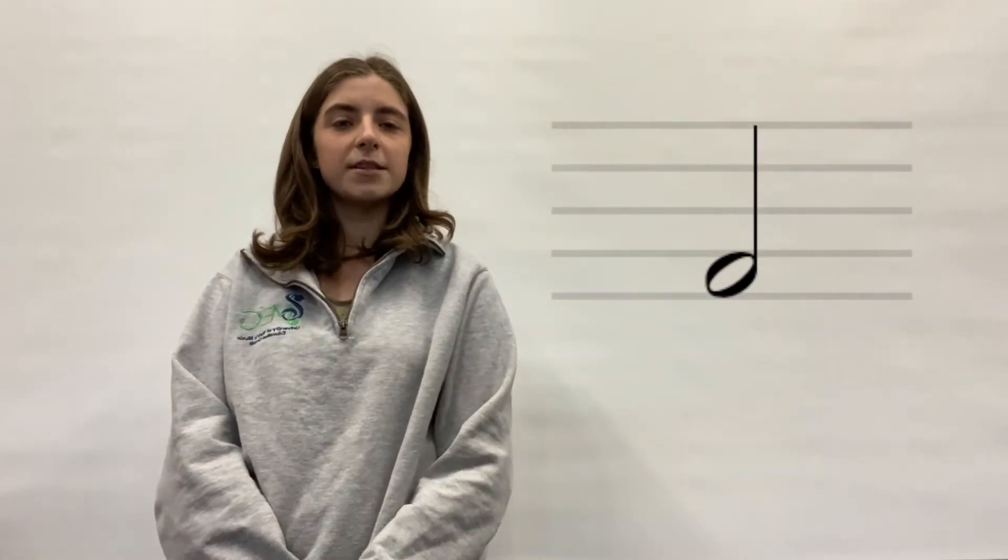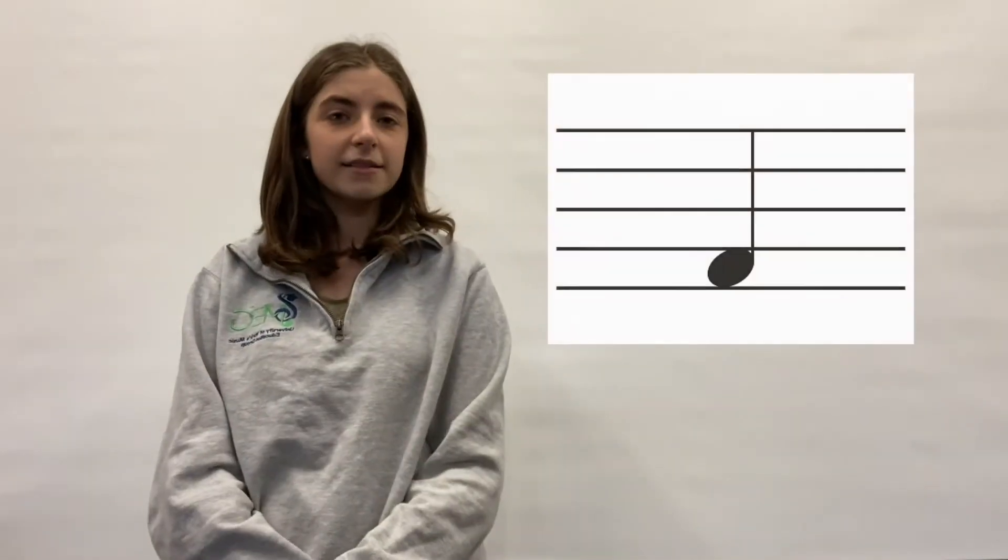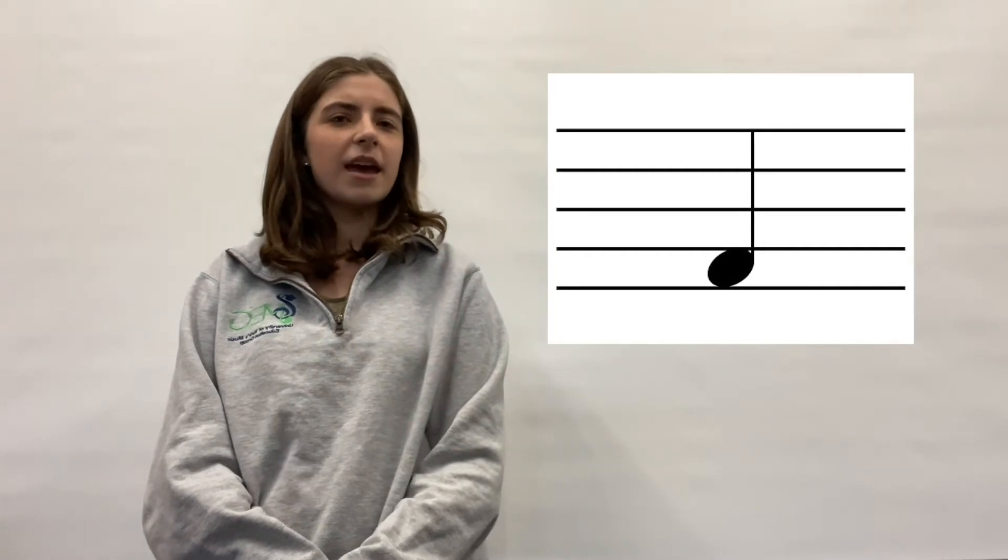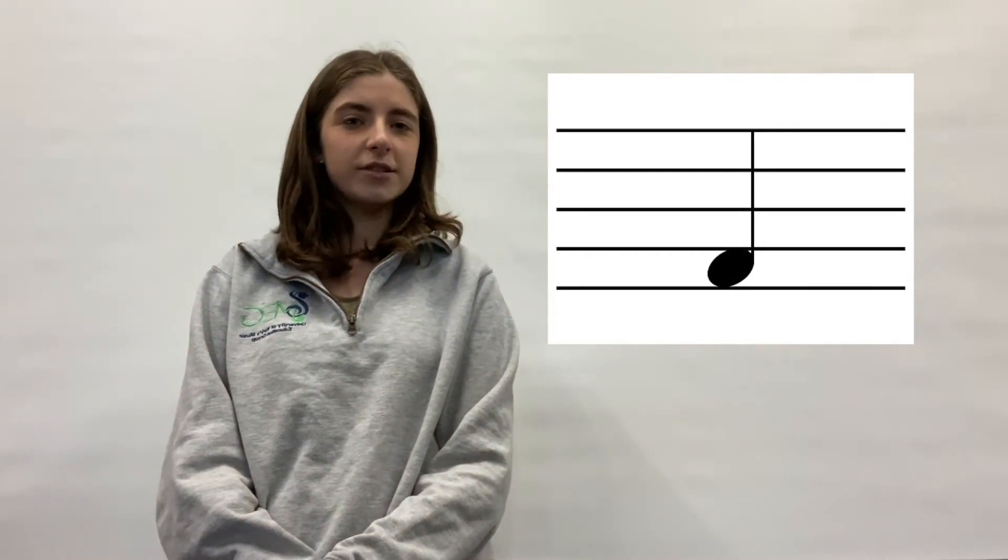This next note is a minim and it's made up of two beats so it's slightly shorter than a semibreve. Next we have a crotchet which is worth just one beat and looks like this. It's kind of like a minim but with it coloured in.